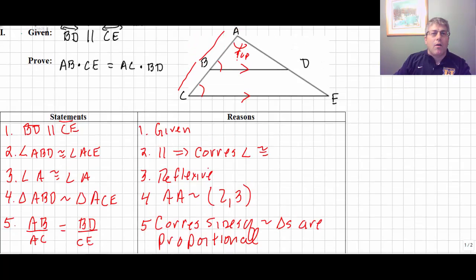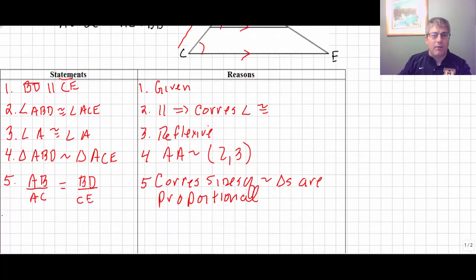And then, well, don't we know if we have a proportion, we can multiply it out, we can multiply the means and extremes. Which then gives us, multiply across, AB times CE has to equal AC times BD. We're simply multiplying across. And if we're paying attention, if we know this is our final step, we should know if we multiply out that these do have to be across from each other.